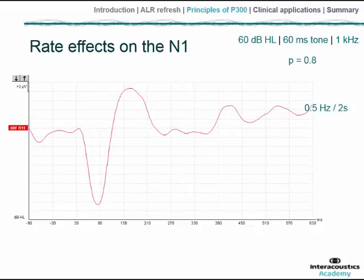In this case it was a 1 kHz pure tone sound presented at a comfortable volume to a normal hearing listener. The stimulus probability was 0.8. We can see in this first trace the obligatory responses: the P1, the N1, and the P2, arising around 40 milliseconds, then about 85, and then around 160 milliseconds respectively.